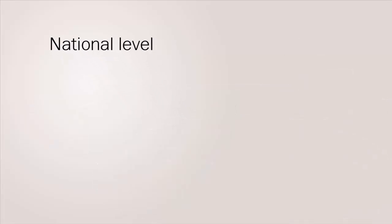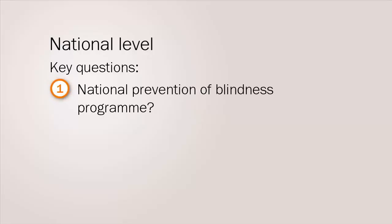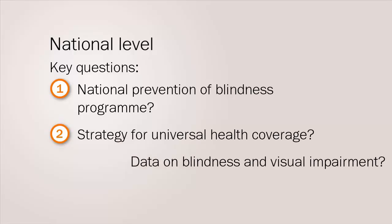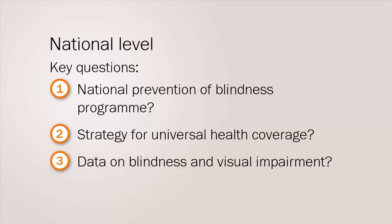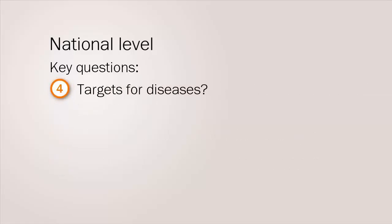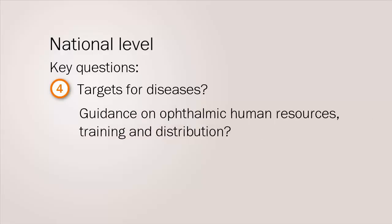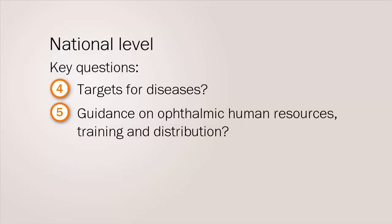At national level, the key questions to ask include: Is there a national prevention of blindness program? Is there a strategy for universal health coverage? What data already exists on blindness and visual impairment? Are there targets for diseases such as cataract and refractive error? Is there guidance on ophthalmic human resources, training and distribution?